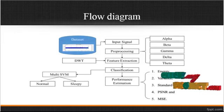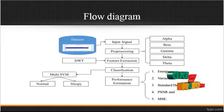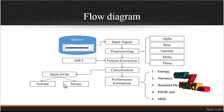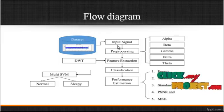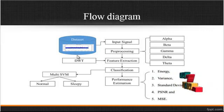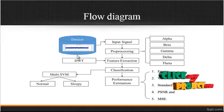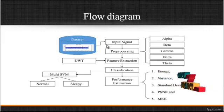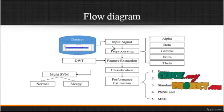Now we are going to discuss the flow diagram for the process. This is the overall flow structure. First, the input signal is taken from the dataset, which contains both sleepy and normal data. After getting the input signal from the dataset, preprocessing is carried out.